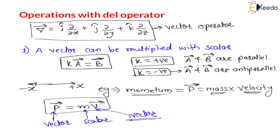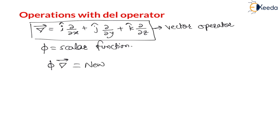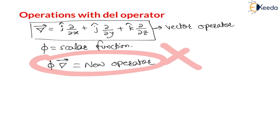Now let us understand what happens if the del operator is applied on a scalar function. Let us say we have the del operator and one phi which is a scalar function. There are two ways to operate phi with the del operator. If phi is written first and then the del operator, this does not have significance — it would just produce a new operator, five times the previous operator, with no practical application.